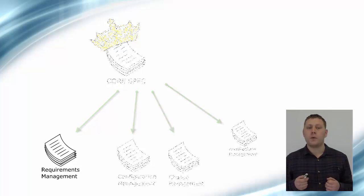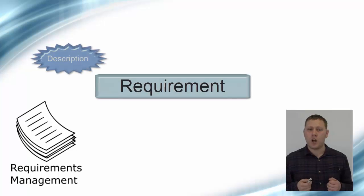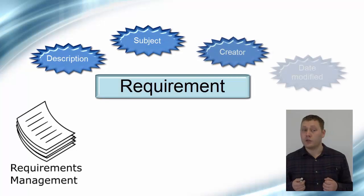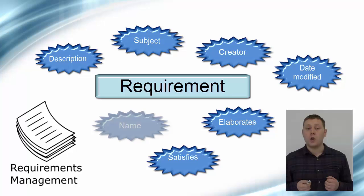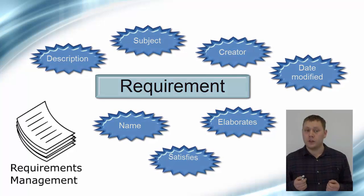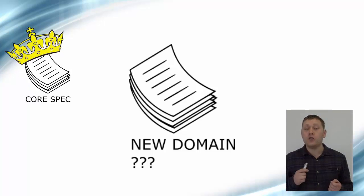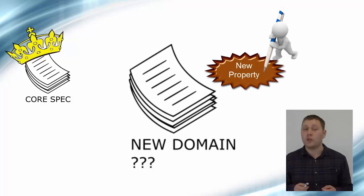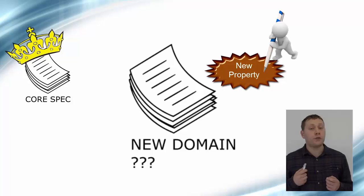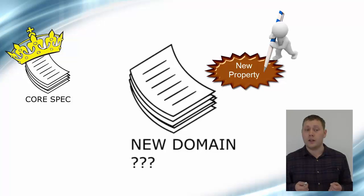For example, in the requirements specification, the concept of a requirement is defined along with attributes such as the name, description, what it satisfies, and so on. What happens though if your domain isn't covered? Well, that's okay. You can still use the core specification and define yourself the concepts that you wish to exchange for your specific use case. Maybe at a later stage you could formalize your concepts into your own specification and propose them to OSLC as a new domain.